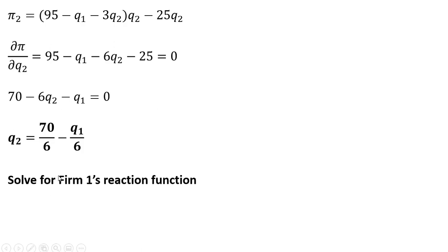Now let's get firm 1's reaction function. Similar story here. We're going to set up firm 1's profit function. For P subscript 1, we're going to replace that with firm 1's inverse demand. So making that substitution and plugging in firm 1's total cost.